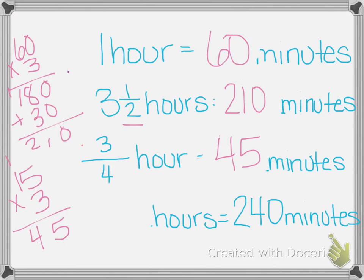The last one, blank hours equals 240 minutes. So again, I know there are 60 minutes in an hour. So I have to do 240 divided by 60. Since there are zeros in both, I can get rid of them. 6 goes into 24 4 times. So my answer is 4 hours.